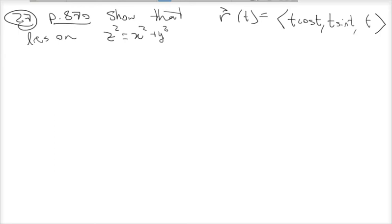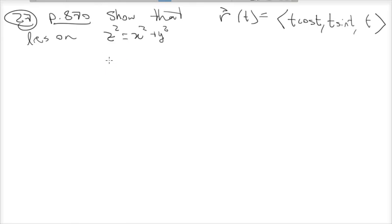We're going to do number 27 on page 870. The question asks us to show that this vector-valued function lies on a given function. From our conics section, you should be able to identify this as a kind of cone. I'm not going to show you the graph until afterwards, because it is difficult to visualize 3D graphs and vector-valued functions. It's a good skill to solve problems like this without looking at graphs, since there will be scenarios where you won't have 3D graphing software available.